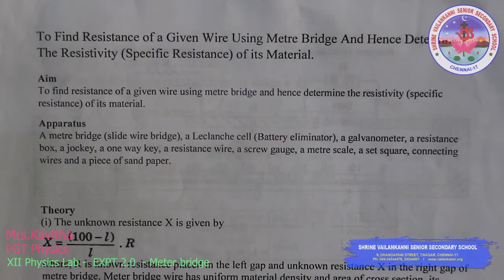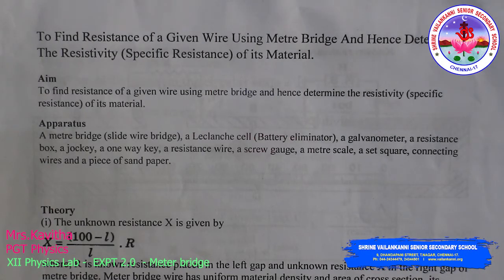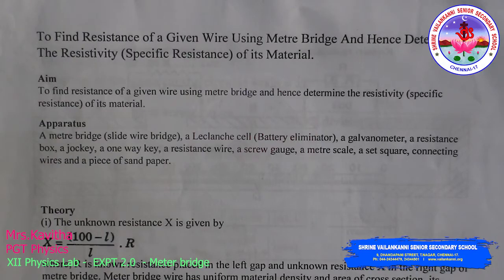Good day all. Experiment number 2: to find the resistance of a given wire using a meter bridge and hence determine the resistivity — specific resistance — of its material. Aim: to determine the resistance of a given wire using a meter bridge and determine the resistivity.